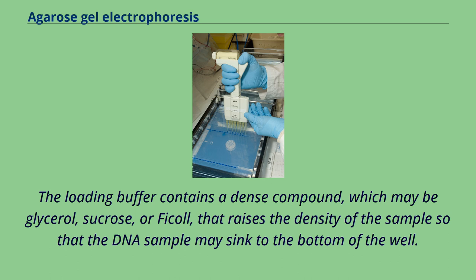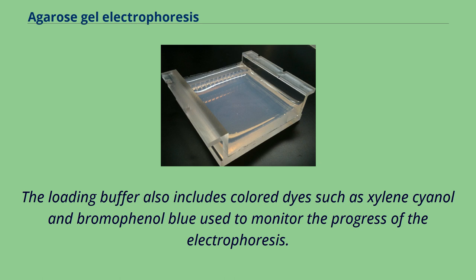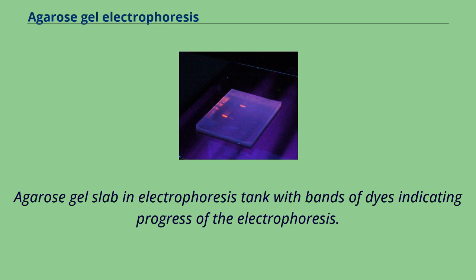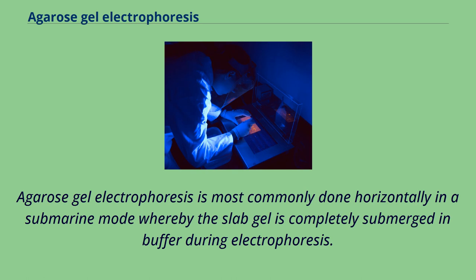If the DNA sample contains residual ethanol after preparation, it may float out of the well. The loading buffer also includes colored dyes such as xylene cyanol and bromophenol blue, used to monitor the progress of electrophoresis. Agarose gel electrophoresis is most commonly done horizontally in a submarine mode, whereby the slab gel is completely submerged in buffer during electrophoresis. It is also possible but less common to perform the electrophoresis vertically.